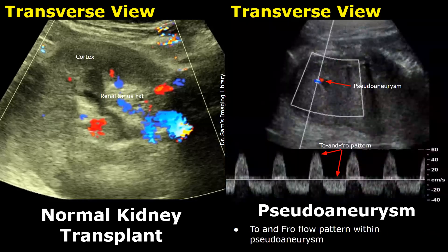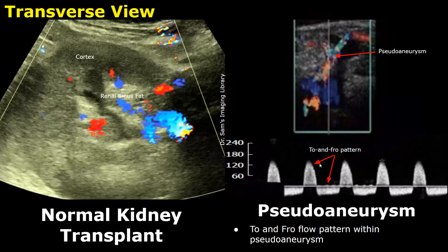This is a spectral Doppler of a pseudoaneurysm. We will find to-and-fro flow, which is an alternating forward and reverse flow — one waveform will be seen above the baseline and the next below the baseline. Here is another example of a spectral Doppler waveform of a pseudoaneurysm, showing the to-and-fro flow pattern.